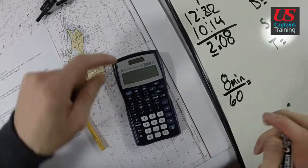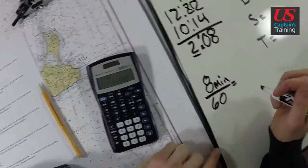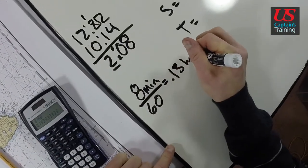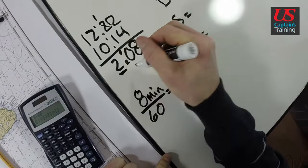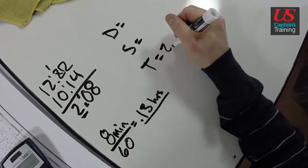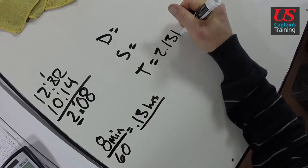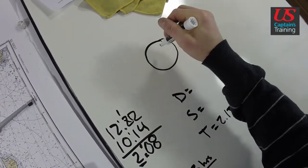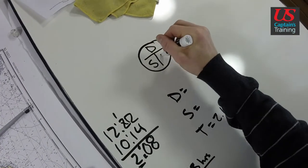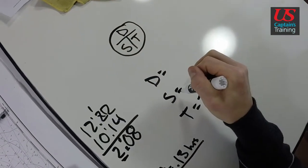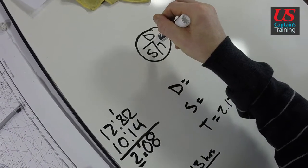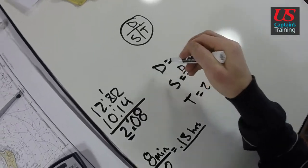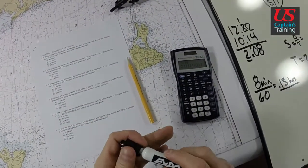0.13 hours, so time we have 2.13 hours. If we use our D Street memory aid, distance, speed, time, we need to get speed. Speed is equal to distance divided by time. So we need our distance, distance divided by time. We can get our distance right off the chart.